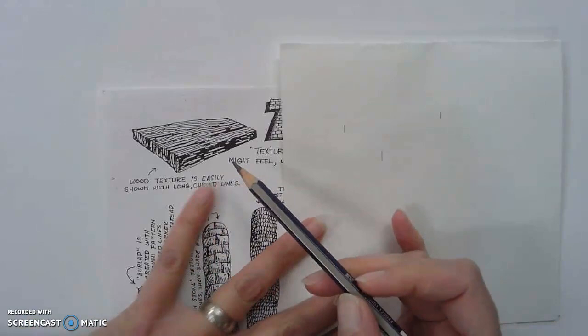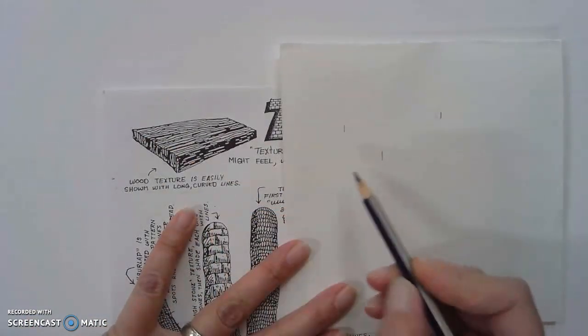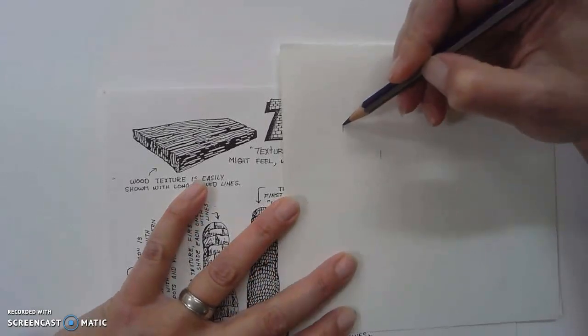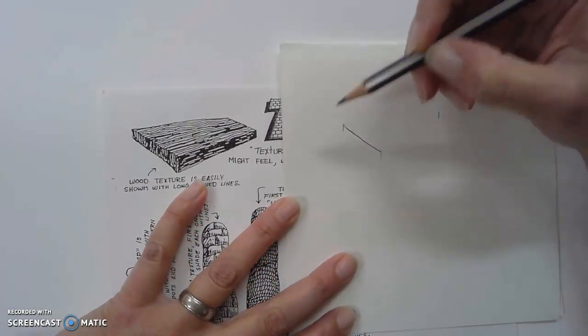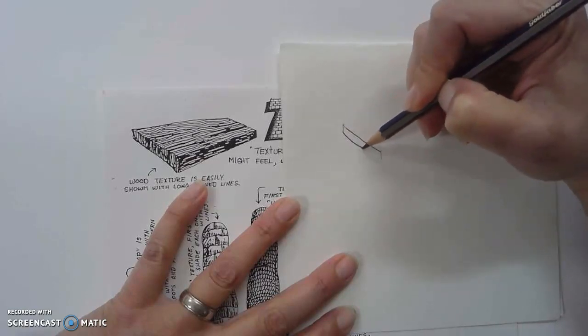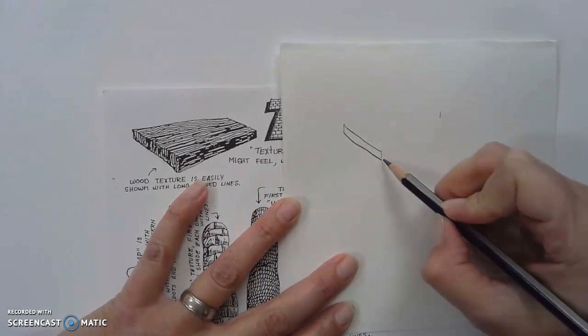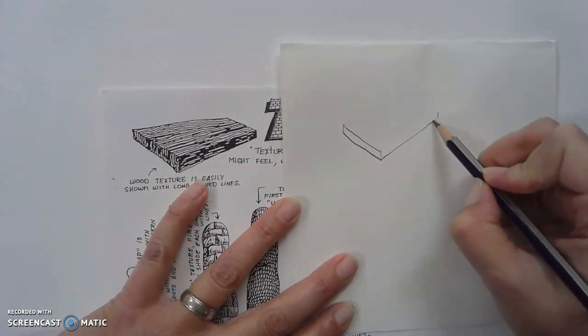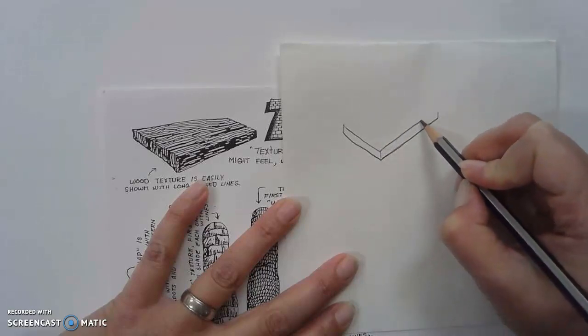And then what we need to do is draw lines that connect the bottom and the top. So I'm going to come through and draw a line like that. And I'm going to draw another line, kind of like so. And then there, and then connect that.